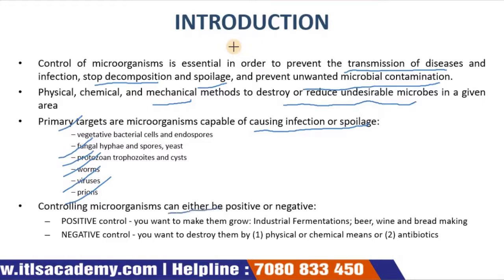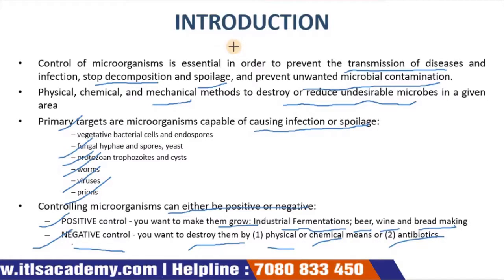Controlling of microorganisms can be either positive or negative. Positive control means you want to make them grow, which is beneficial for industrial microorganisms in beer, wines, and bread making. Negative control means you want to destroy them by physical or chemical means or by using antibiotics.